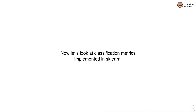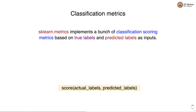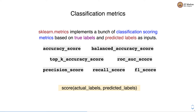Now let's look at classification metrics implemented in sklearn. sklearn implements a variety of classification scoring metrics based on true labels and predicted labels as input. Most scoring functions take actual labels and predicted labels as input and return the score. The available metrics include: accuracy score, balanced accuracy score, top-k score, ROC AUC score, precision score, recall score, and F1 score. Balanced accuracy score helps in the case of imbalanced datasets. ROC AUC score gives the area under the ROC curve, and precision, recall, and F1 score are measures derived from the confusion matrix.